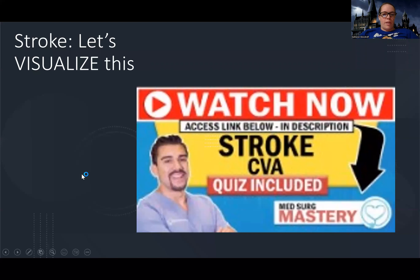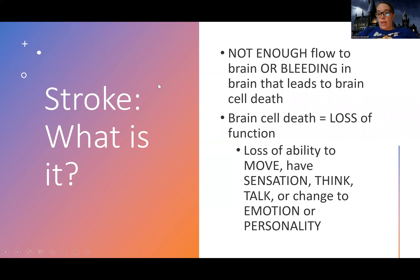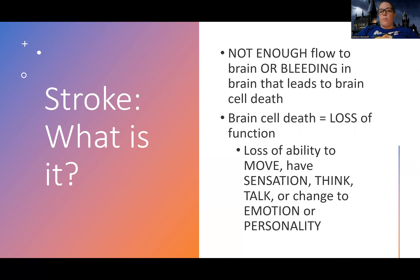Let's talk about what a stroke is. This video will be broken down into multiple pieces because stroke is a big topic. First we're just going to talk about what it is and who gets it. Stroke is effectively like a heart attack in the brain, where there's either not enough flow to the brain — sometimes with an obstruction like a clot — or there's bleeding in the brain. Both of these lead to brain cell death.